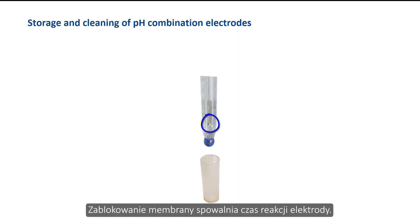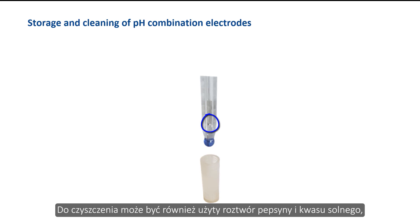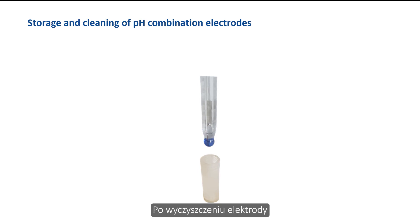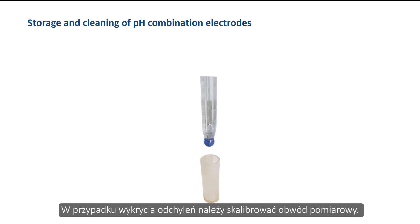Blocking of the diaphragm slows down the response time of the electrode. This effect can often be reduced by cleaning the diaphragm with a brush. A pepsin hydrochloric acid solution can also be used for cleaning, which reduces both protein and chalk deposits. After cleaning the electrode, rinse it and check the function with buffer solutions. The measuring circuit must be recalibrated if deviations are detected.